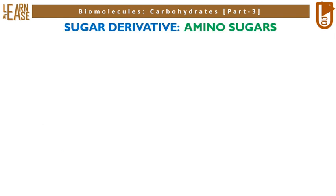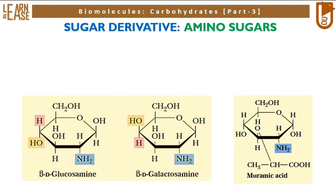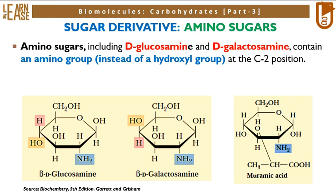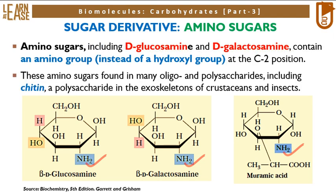Now I will explain sugar derivatives. The first family is amino sugars. Three amino sugars are represented: beta-D-glucosamine, beta-D-galactosamine, and muramic acid. Amino sugars including D-glucosamine and D-galactosamine contain an amino group instead of a hydroxyl group at the C2 position. Tick marks in the image represent the amino group at C2 for all three amino sugars. These amino sugars are found in many oligo- and polysaccharides, including chitin, a polysaccharide in the exoskeletons of crustaceans and insects.